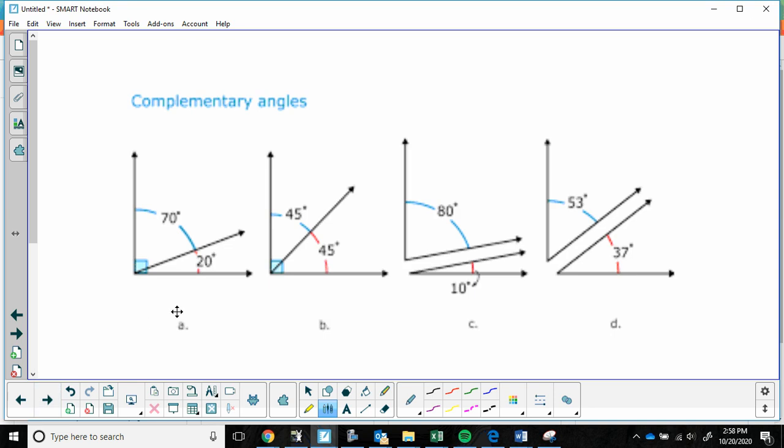Complementary angles add up to 90 degrees. They are half of supplementary. They are the smaller one of 90 degrees. You will know that they're complementary if you see two angles and they give you this box. That box means 90 degrees. That is your easiest clue.